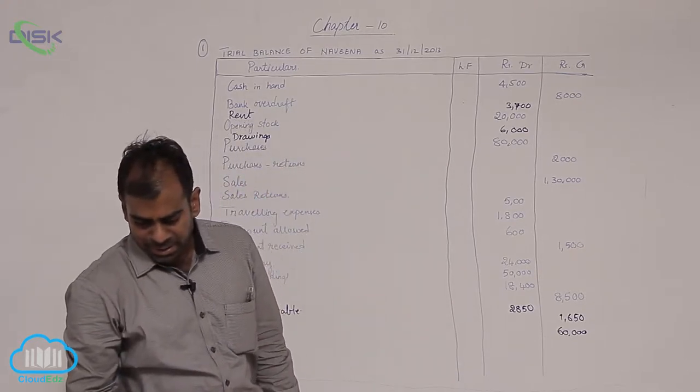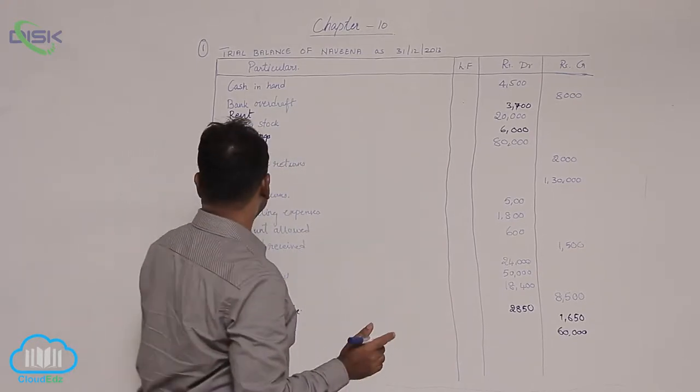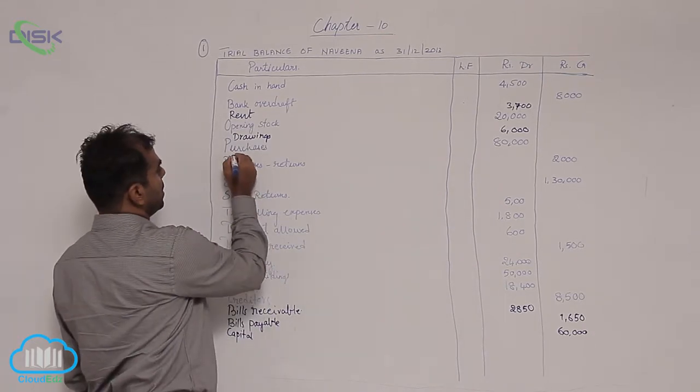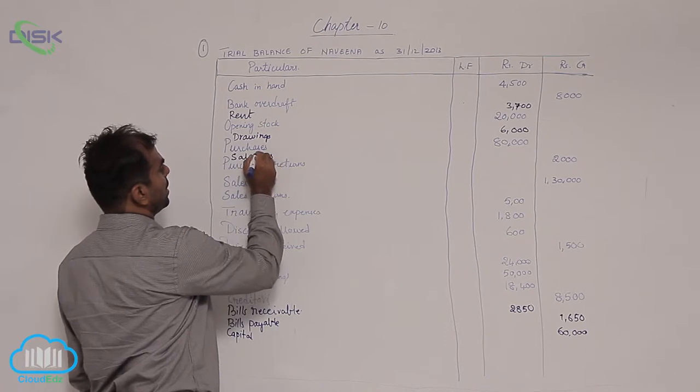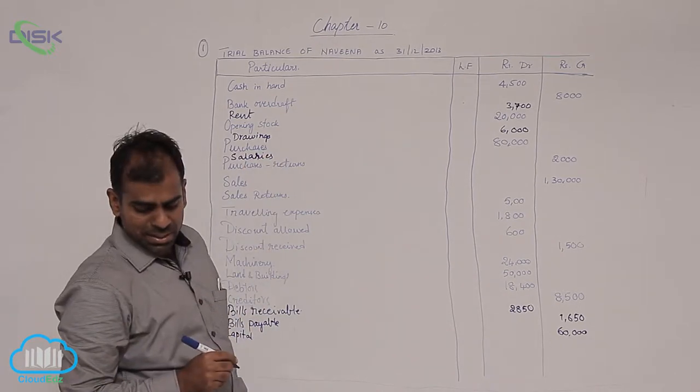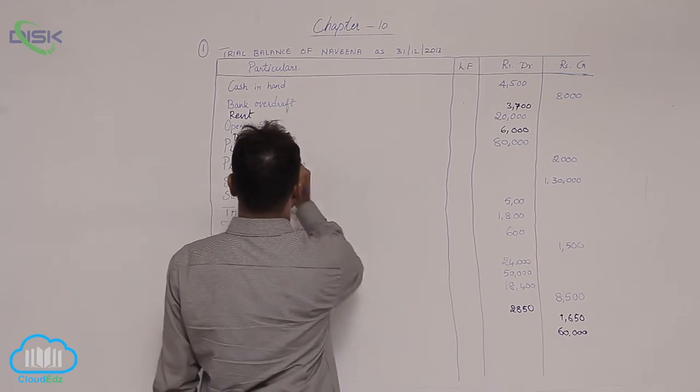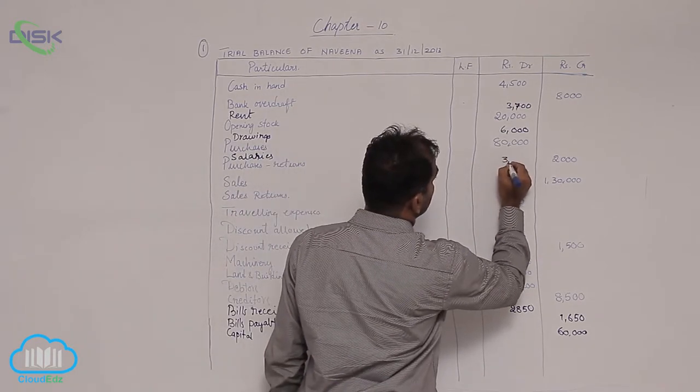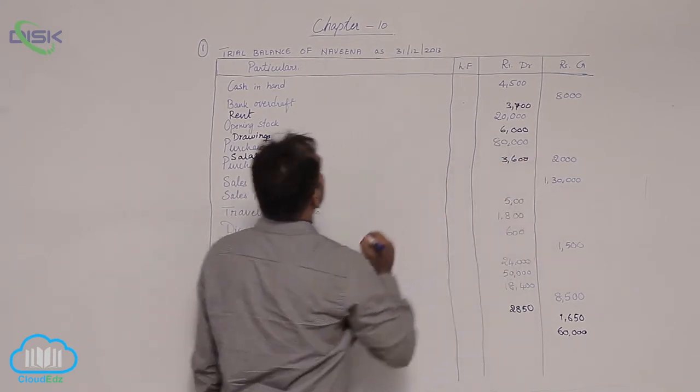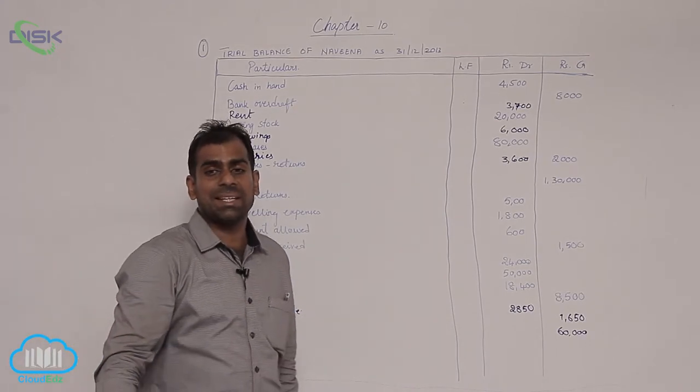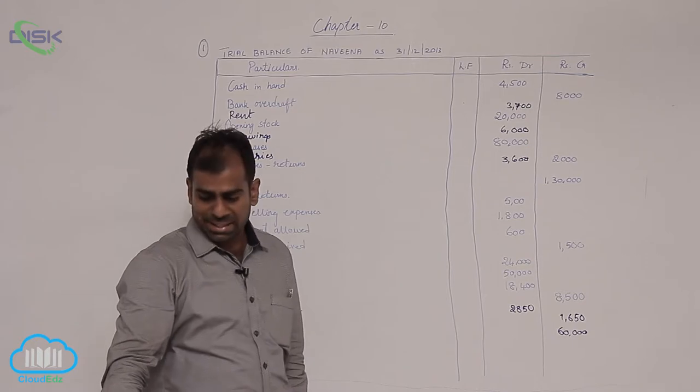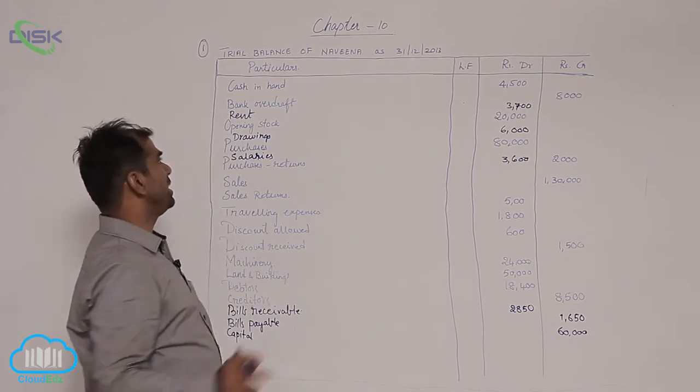Now salaries. Salaries is also an expense, so I am writing here salaries debit, the amount being 3,600. Next we have loan, and specifically in brackets it has stated credit. So when specifically something is stated, you take it as debit or credit only.